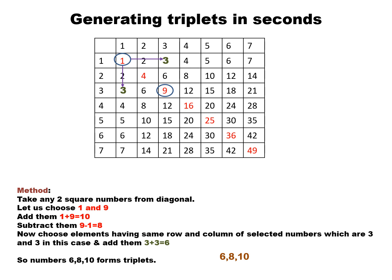Let us learn how to generate triplets in seconds. We have this method. Firstly, we will write down this table in which nothing is difficult. We will write down the counting in the first row, then in the first column also we are going to write the counting.